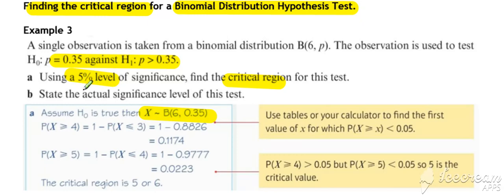You can do a bit of trial and improvement on your calculator. You're essentially looking for the value of X that satisfies that statement. If we try X greater than or equal to 4, that gives us a value above 0.05. If we try X greater than 5, that gives us a value below 0.05.